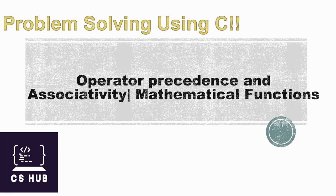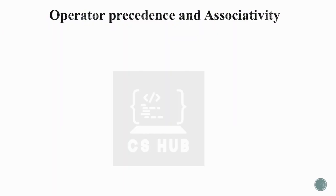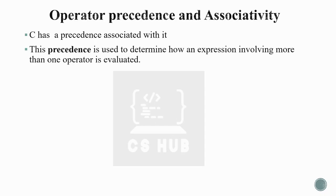Welcome to Computer Science. The subject is Problem Solving Using C, and the topic is operator precedence and associativity and mathematical functions. We already covered arithmetic operators in the previous video. In C, each operator has a precedence associated with it. This precedence is used to determine how an expression involving more than one operator is evaluated.